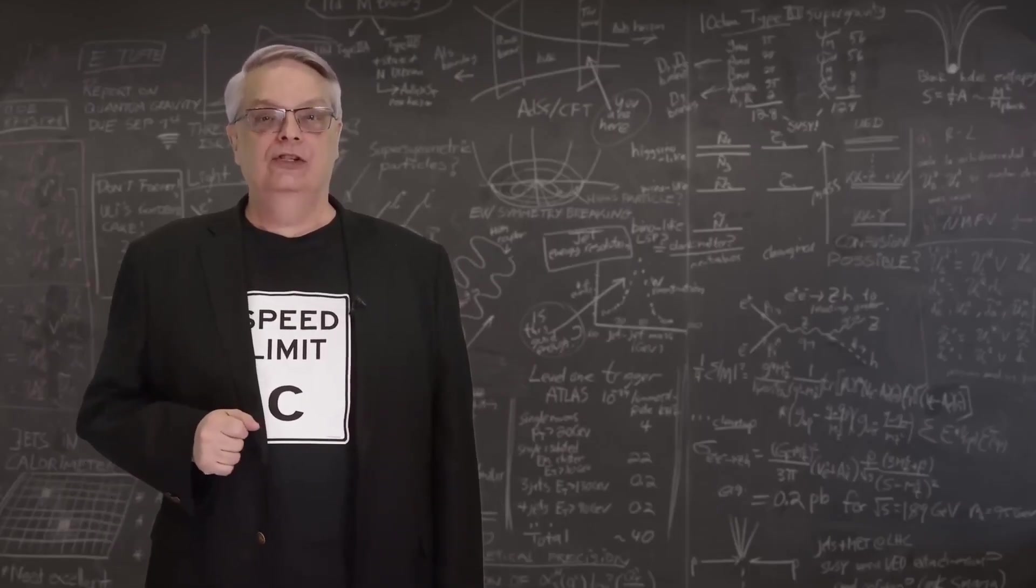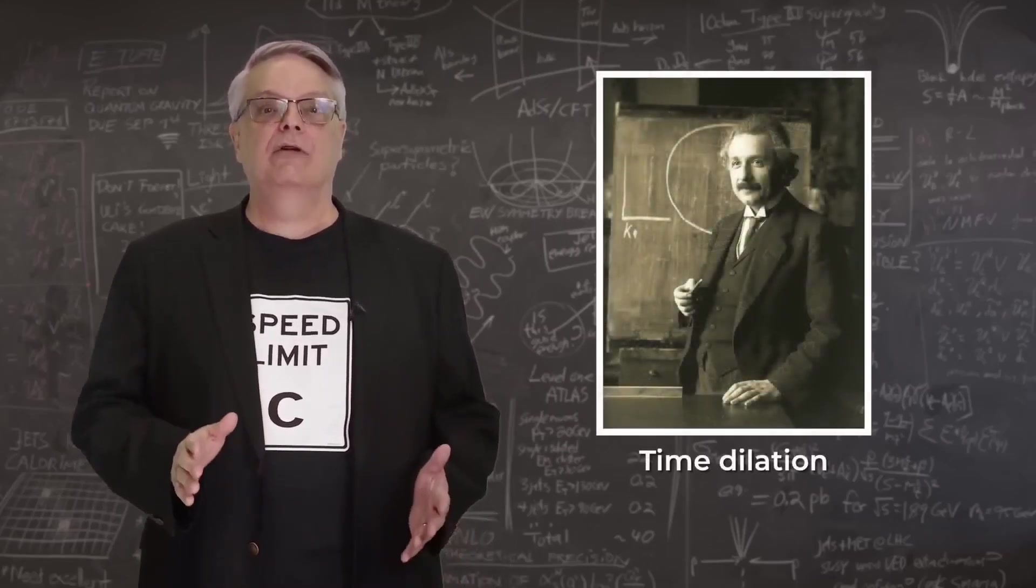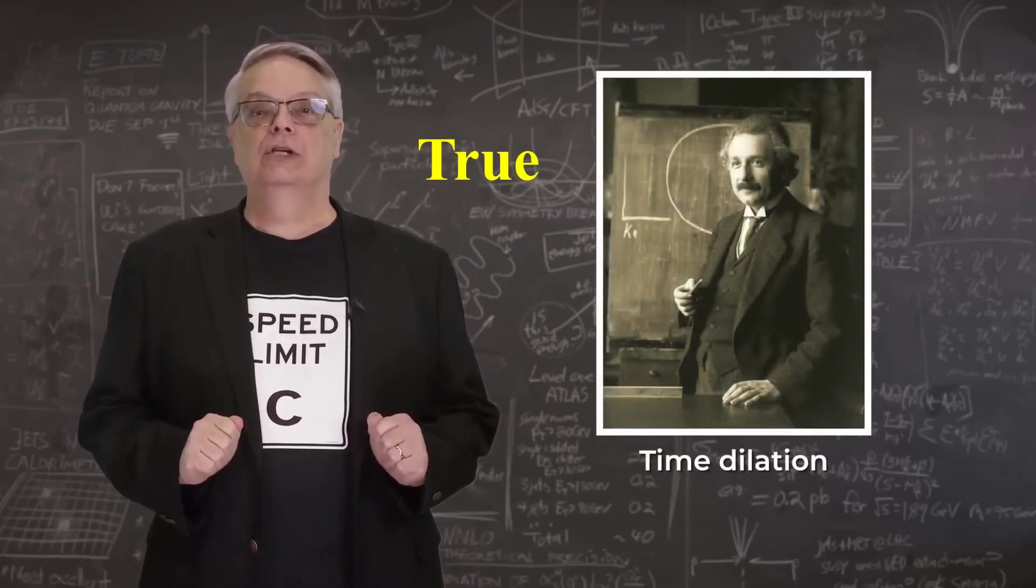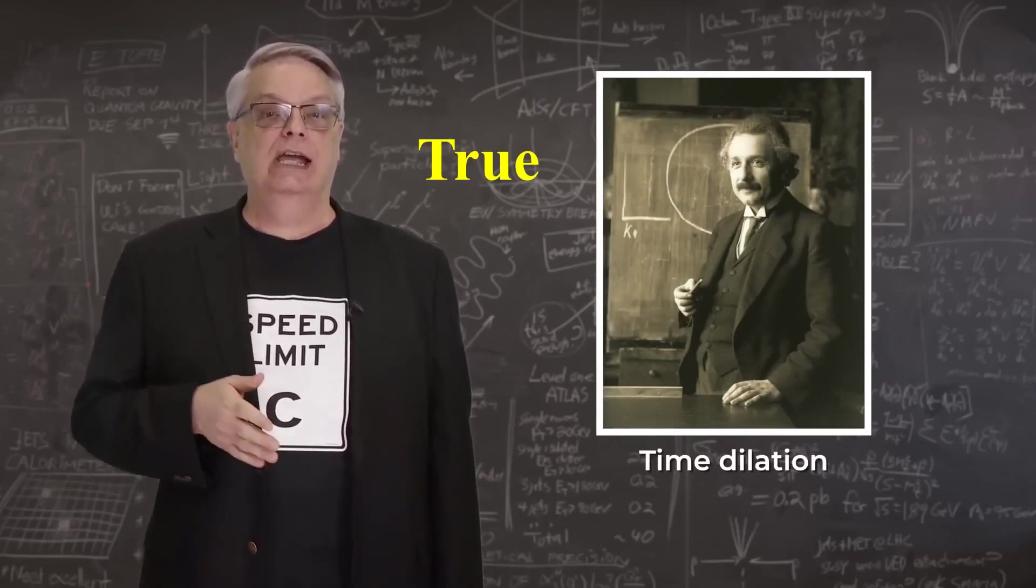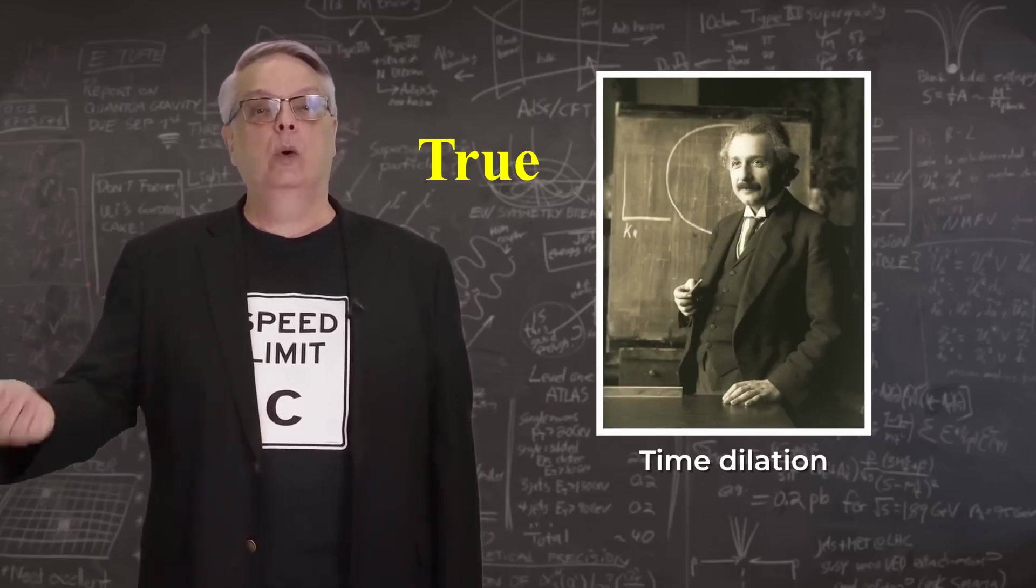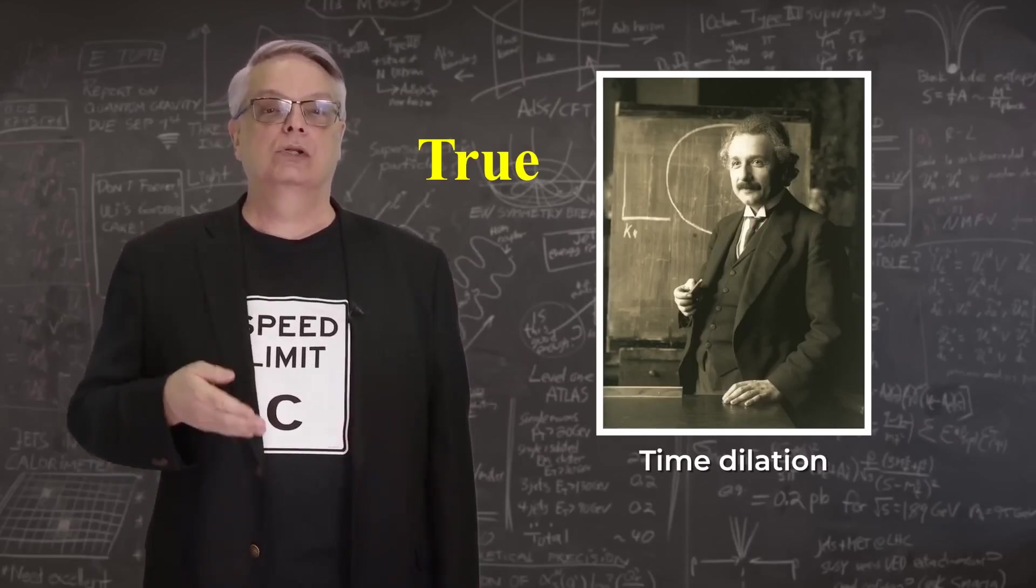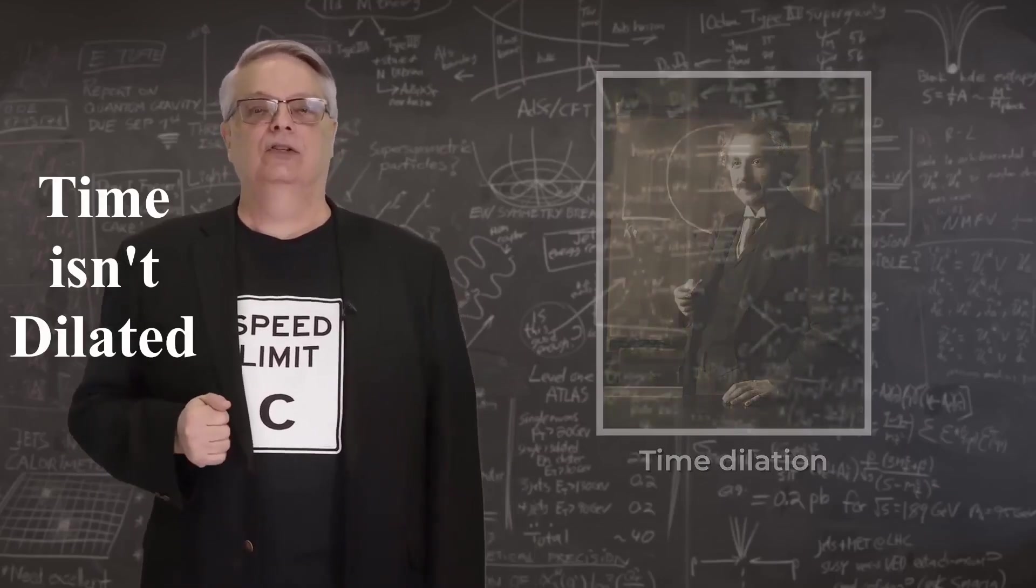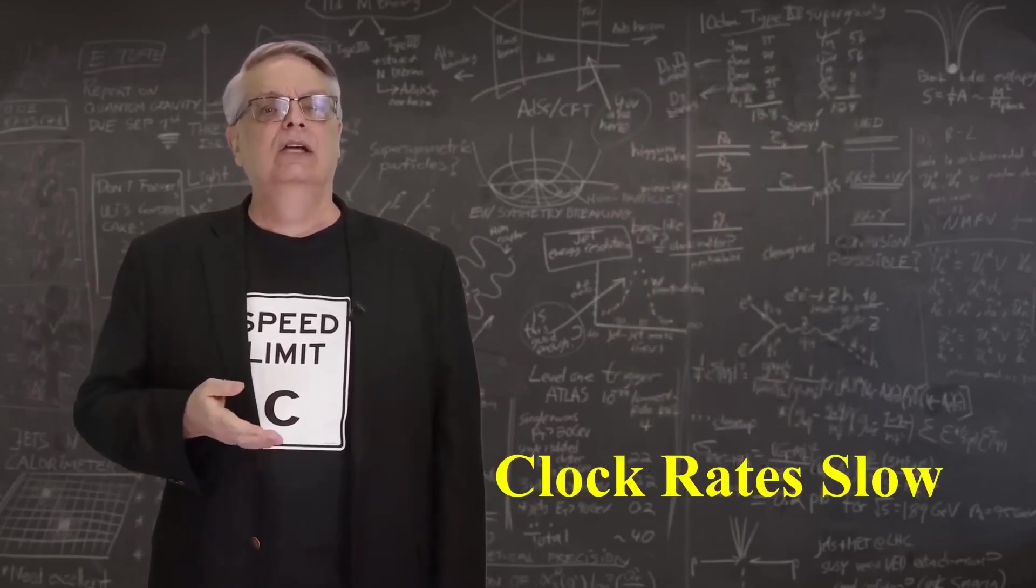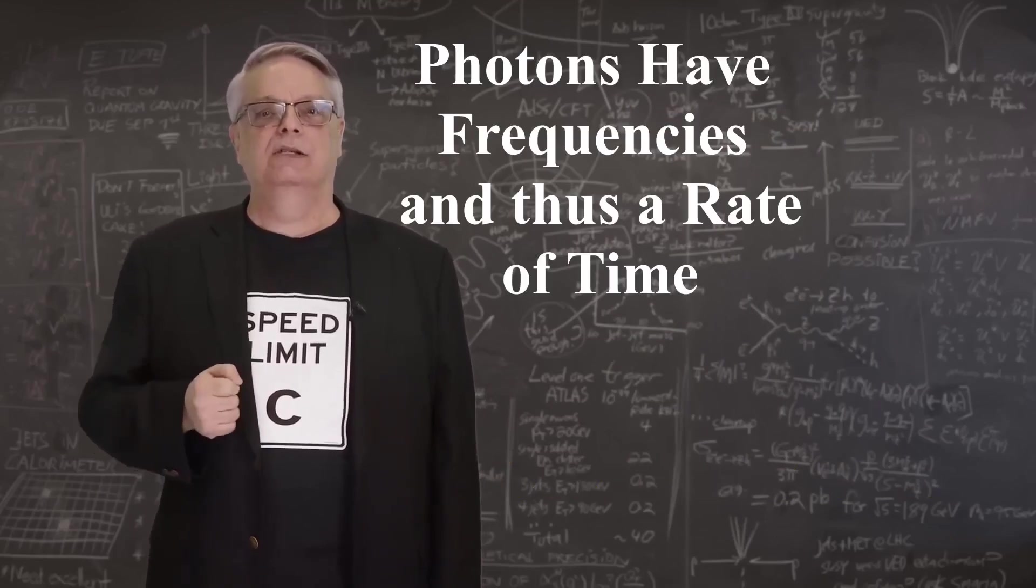It's a well-known feature that in Einstein's theory of relativity, different observers will experience time differently. Specifically, it's often claimed that an observer moving quickly will experience time more slowly than one that is stationary. This phenomenon is called time dilation. What I want to talk about here is whether a photon experiences time.